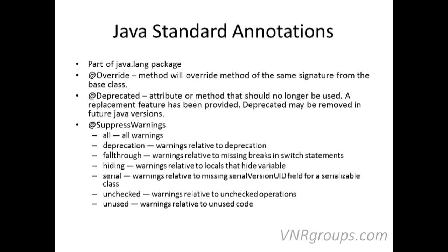Sometimes you have unused code or unused variables, and in Eclipse you will see warnings about those. Or if you are using deprecated methods, you may not want to see those warnings when you compile or in Eclipse. In that case, you use the annotation @SuppressWarnings. You can pass one or more elements to it — when you pass "all", all kinds of warnings will be suppressed. Or you can specify one or more specific ones like "unused" and "unchecked", using any combination.